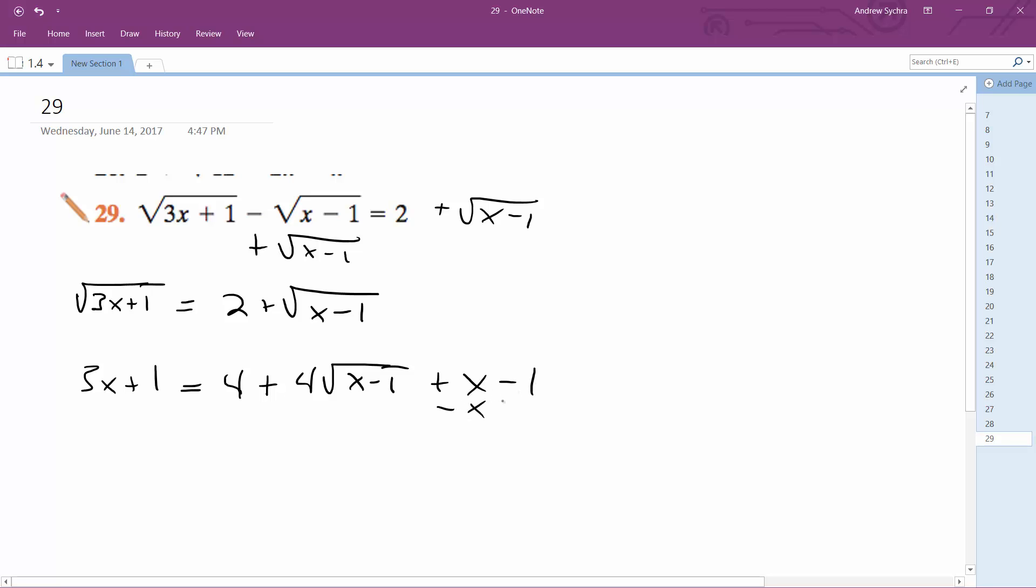Move these over to the left side, and along with this, so I end up with 2x. So it's plus 1 minus, so plus 1 minus 4 plus 1, so it becomes 2x minus 2 is equal to 4 root x minus 1.